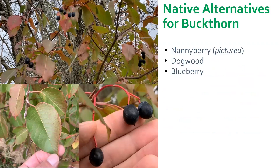There are some good shrubby trees to plant instead of buckthorn. Any native viburnum species — one of the best is nannyberry because it produces edible berries good for pollinators and foraging woodland species. There are multiple species of Cornus or dogwood, and there are blueberries too, which will all be good to put along your borders instead of letting buckthorn grow.